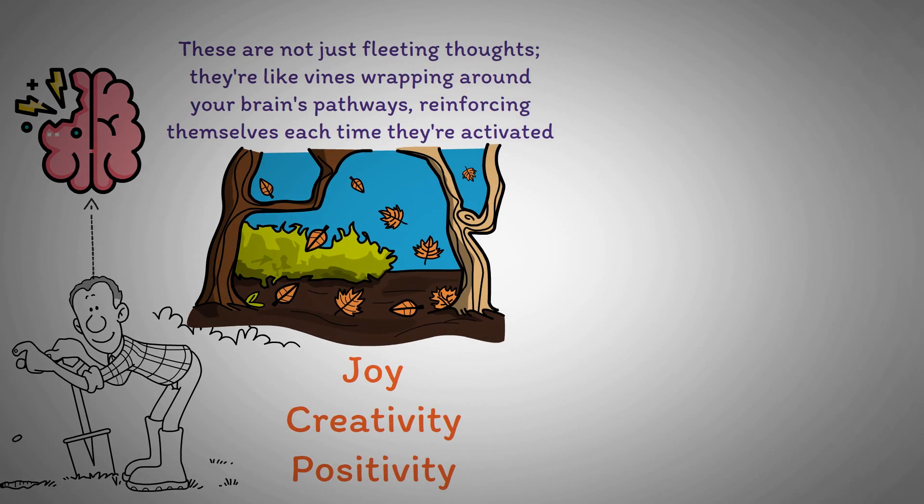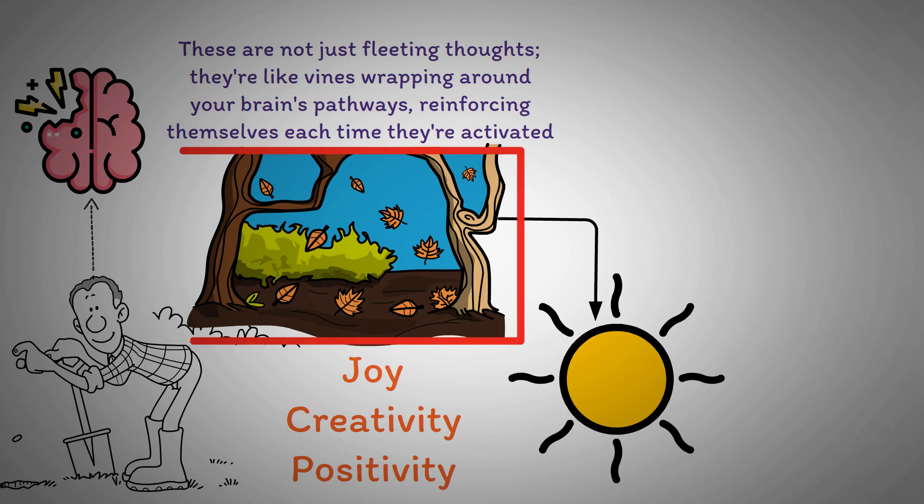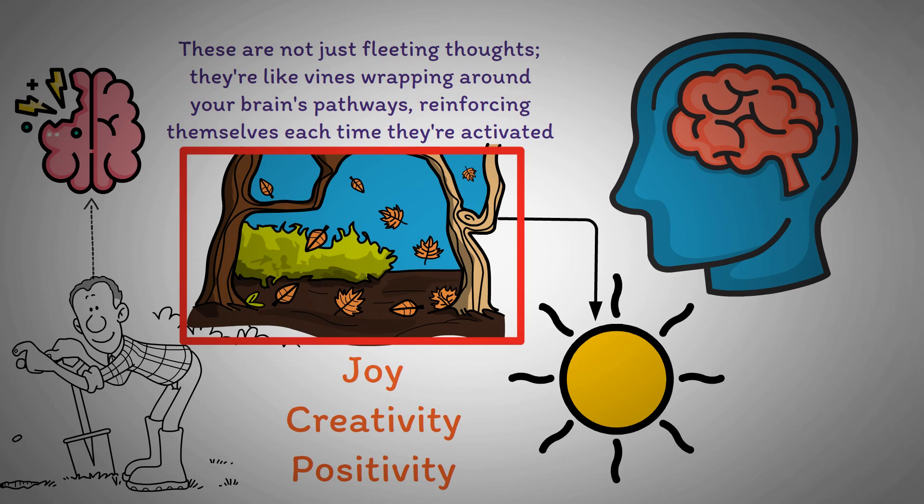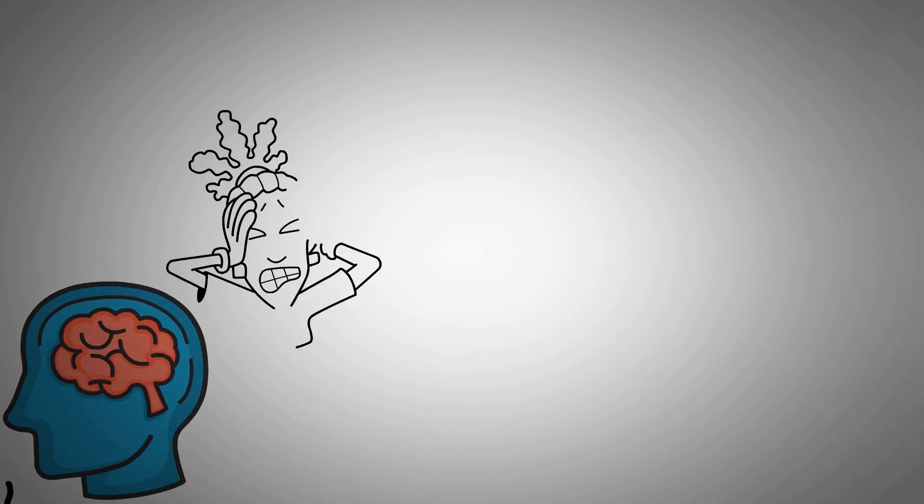Without intervention, these weeds can become so dense that they block out the sunlight, preventing new growth and stifling the beauty that lies beneath them. This garden analogy isn't just a metaphor. It's a reflection of how our neural pathways work. Our brains tend to strengthen connections we use frequently. And if those connections are negative, they can become the default pathways, making it harder to experience positive thoughts and emotions.